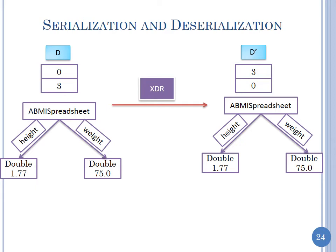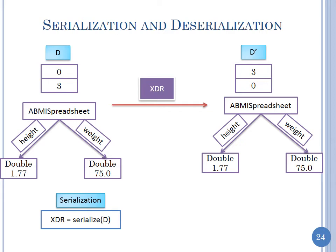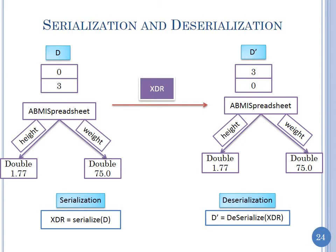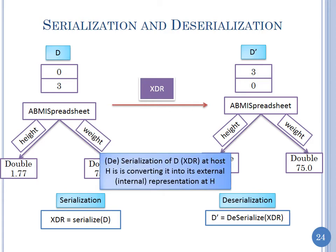Two important terms in this context: serialization and deserialization. Serialization is converting a data structure in memory — which may have pointers — into a serialized sequence of bytes sent over the network. Deserialization is taking that linear sequence from the network and constructing a data structure from it. Sometimes 'serialization' is used for both. Typically, all systems that support serialization/deserialization allow the same routine to be used for both directions.